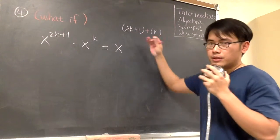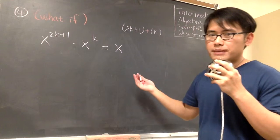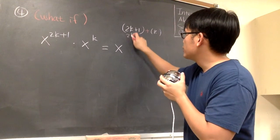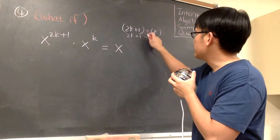And you see that I put it in the parenthesis, but in the parenthesis it doesn't really matter. This is the same as 2k plus 1 and then plus k.